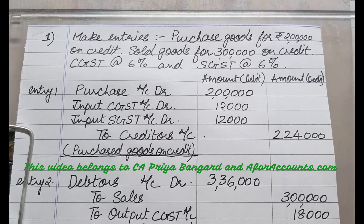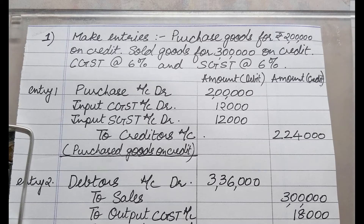Input CGST and SGST will always be debit. Same way, sales is a source of income. Sales is always credited in journal entry and the output CGST and output SGST will always be credit. This is a very important point to remember — don't make a mistake in the exam.